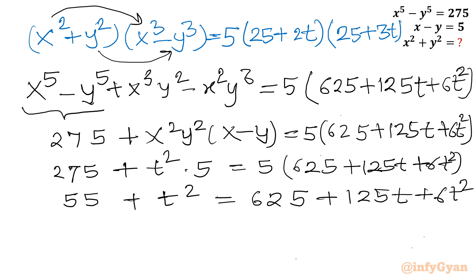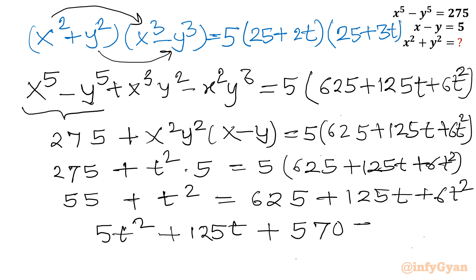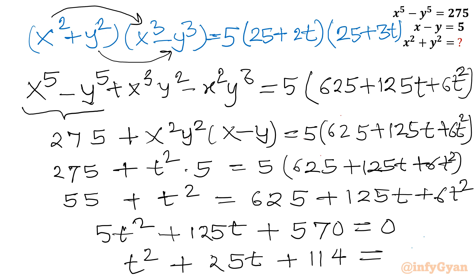Taking all terms to the right-hand side: 5t squared plus 125t plus 625 minus 55 equals 0, which gives 5t squared plus 125t plus 570 equals 0. The equation is divisible by 5, so dividing by 5 gives t squared plus 25t plus 114 equals 0.